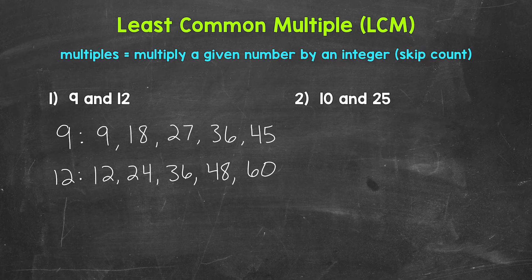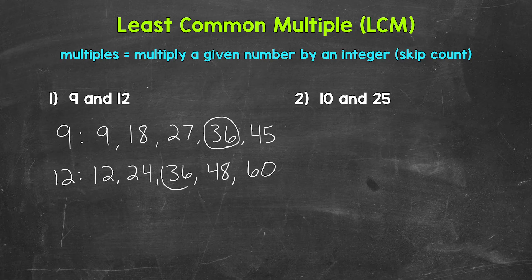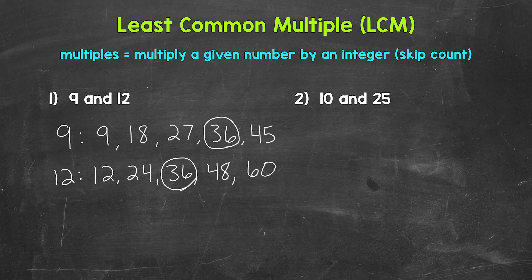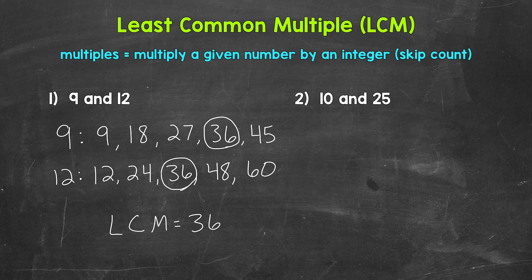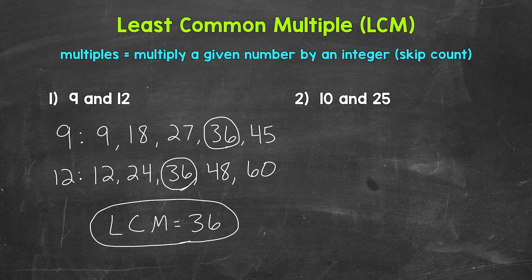Now that we have some multiples listed for both 9 and 12, we need to look for any common multiples. So any multiples that they share. And then specifically, we need to look for the least common multiple. Well, 36 is a common multiple. And it's going to be the least common multiple. So the smallest multiple in value that they share. So let's write that the LCM, which stands for least common multiple, is 36. So the least common multiple of 9 and 12 is 36.